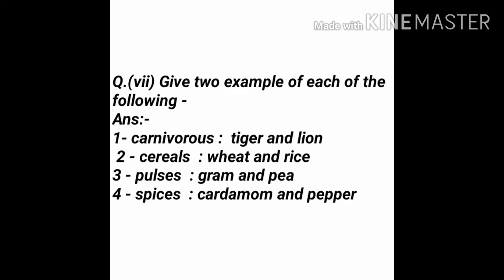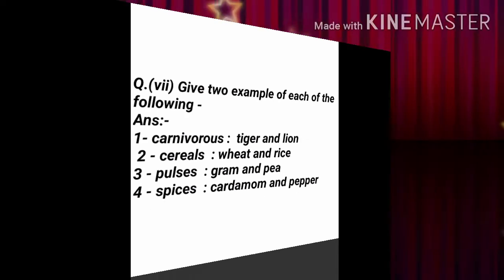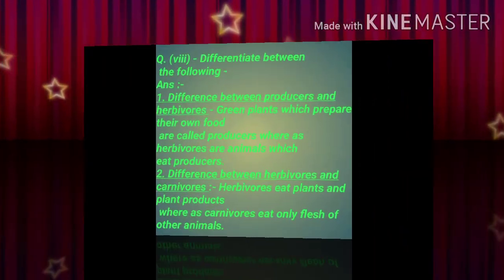Question 5 — Give two examples of each of the following. Carnivores: Tiger and lion. Cereals: Wheat and rice. Pulses: Gram and pea. Spices: Cardamom and pepper.